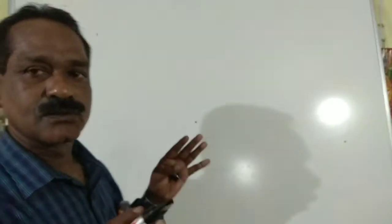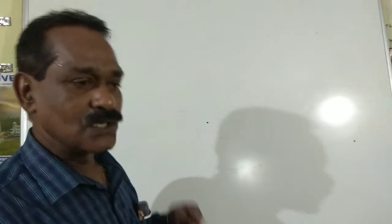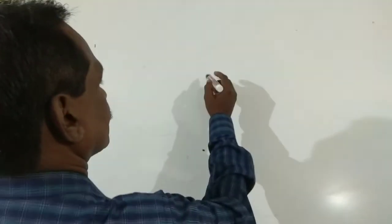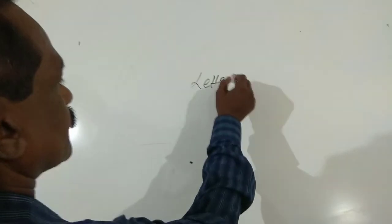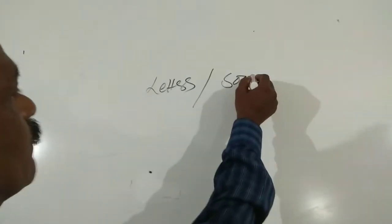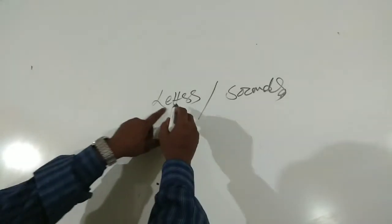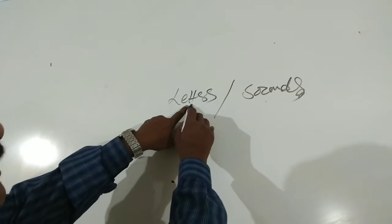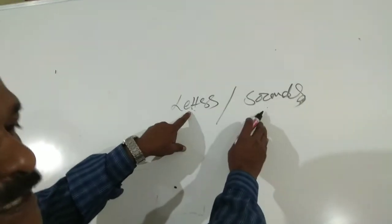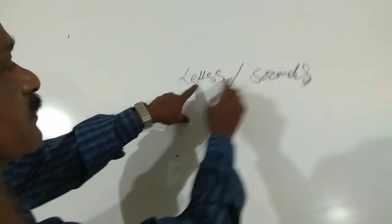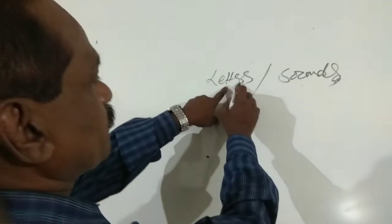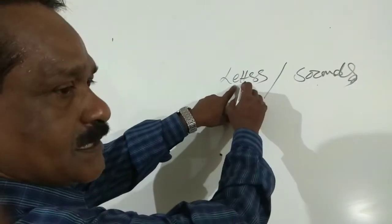Some basic ideas you should have in connection with knowing a foreign language like English. Letters and sounds — letters cannot exist without sounds. They have a relationship; both depend on each other. If letters represent sounds, sounds also represent the letters.